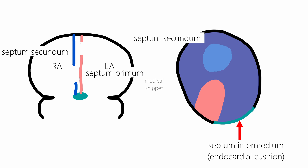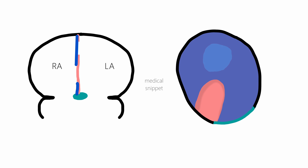After birth, the lungs start to function. The right atrial pressure falls and the left atrial pressure increases. This causes the flap valve septum primum to fuse with the septum secundum and also closes the opening in the septum secundum, thus obliterating the foramen ovale. This creates a morphologic and physiologic separation of the atria. When seen from the right atrium, the septum primum which closes the opening in the septum secundum looks like a depression in the interatrial septum. This depression is called the fossa ovalis.